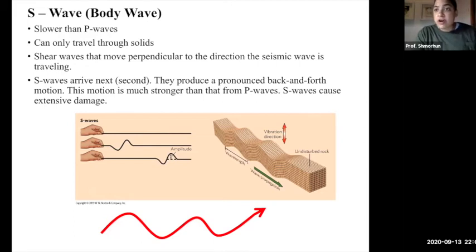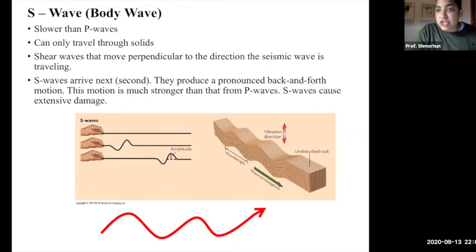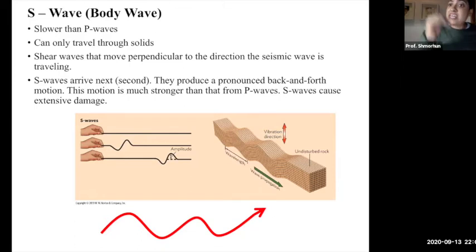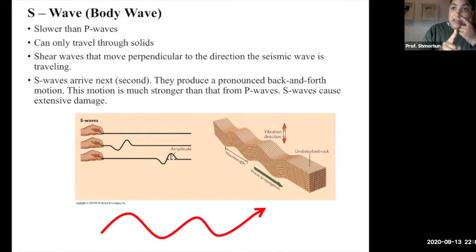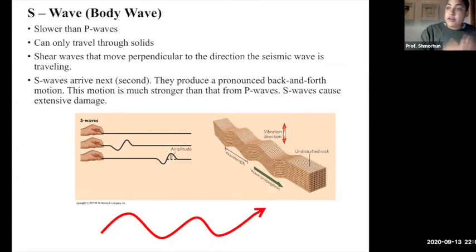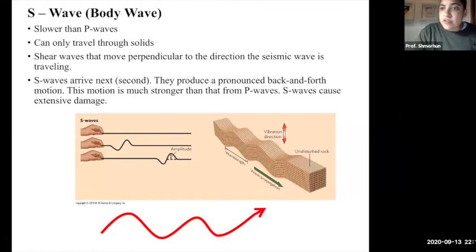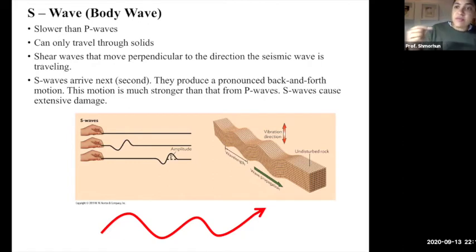S waves — secondary waves — are shear waves. They move perpendicular to the direction of propagation, meaning instead of compressing and changing the volume of material, S waves change the location of that material. As an S wave moves forward, it simultaneously moves up and down like a wave. S waves arrive second: a seismometer will first record the P wave, then the S wave. Because S waves travel perpendicularly to the direction of propagation, they cause extensive damage.